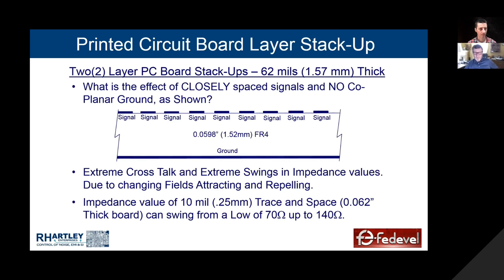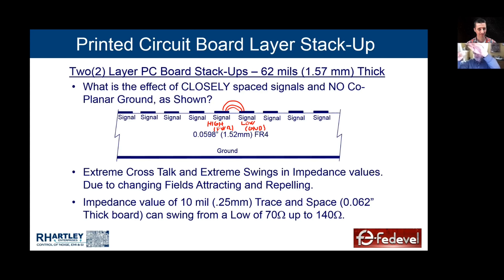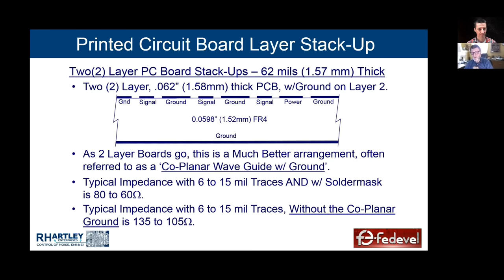Regarding two-layer boards: if you put signals on layer one of a 1.6 mm thick board (62 mil, 1.52 mm core FR4) with ground on the bottom, the impedance of those signal lines will range anywhere from 70 to 140 ohms. As signals go high and low, their fields impact each other — two adjacent signals going high simultaneously repel fields, raising impedance; one high and one low attracts fields, lowering impedance. You have very poor impedance control on a two-layer board unless you put grounds between the signals.